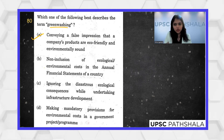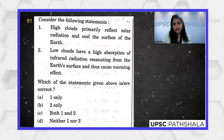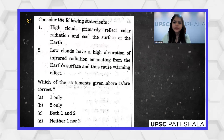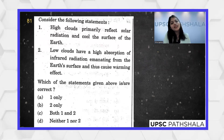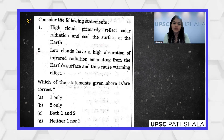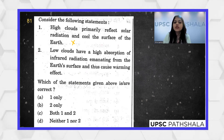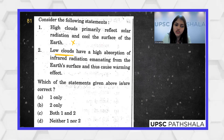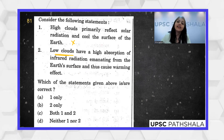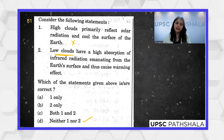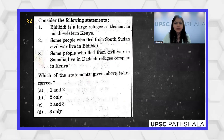Consider the following statements: high clouds primarily reflect solar radiation and cool the surface of the earth. High-altitude clouds have lots of ice crystals and are very cool, but they actually allow most solar radiation to pass through rather than reflecting it — so this is wrong. Low clouds have a high absorption of infrared radiation from the earth's surface and cause a warming effect — but low clouds are near the surface and actually reflect solar radiation, giving a cooling effect. Neither statement is correct, so D is the answer.